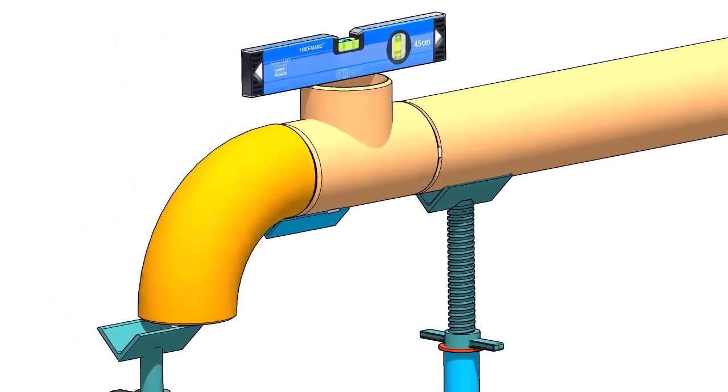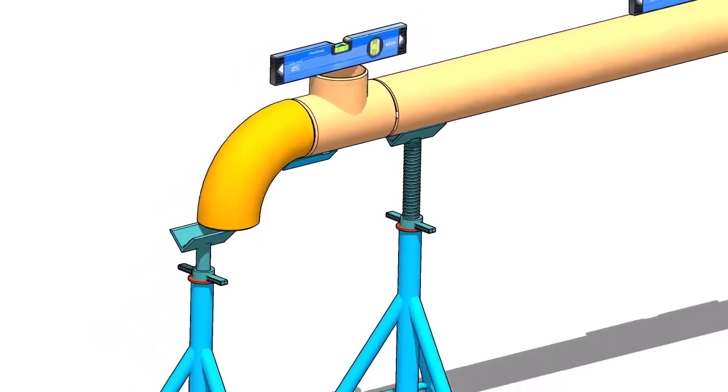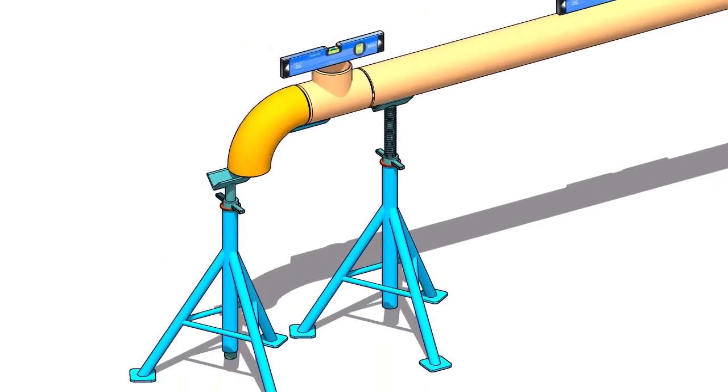Put the elbow on the angle cleat, provide proper support at the lower face of the elbow, unless it will fall down. Put the gap rod between the joint.